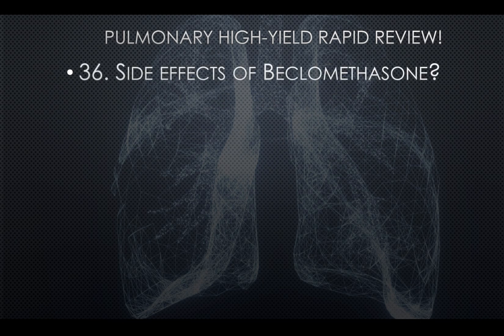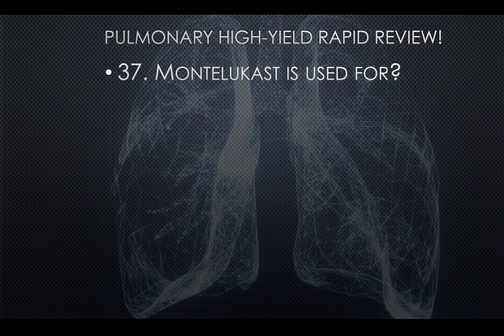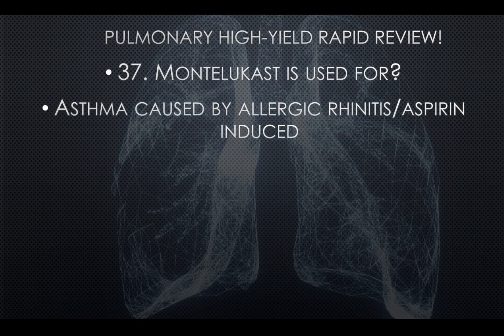Question thirty-six: Side effects of beclomethasone include thrush. A patient comes in with thrush while on different medications — beclomethasone is most likely the cause. Question thirty-seven: Montelukast is used for asthma caused by allergic rhinitis or aspirin-induced asthma. If a patient has asthma with allergic rhinitis or is on aspirin, treat with montelukast.